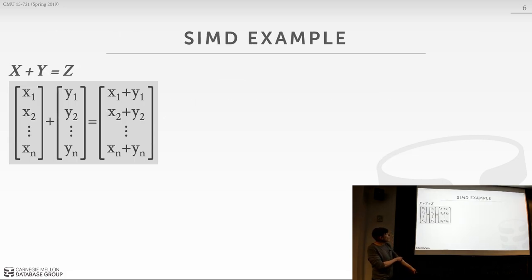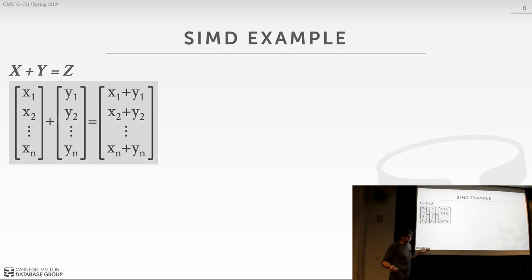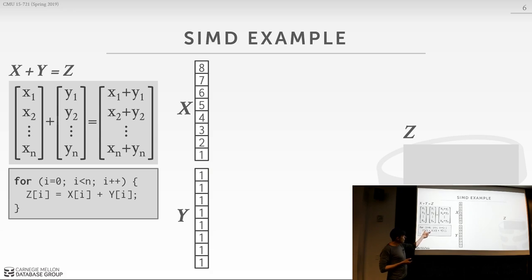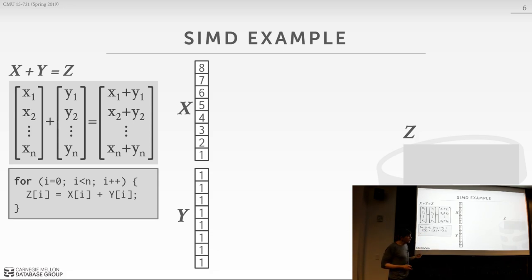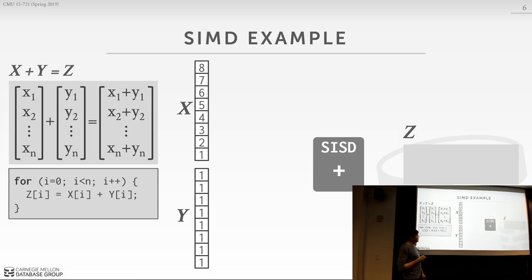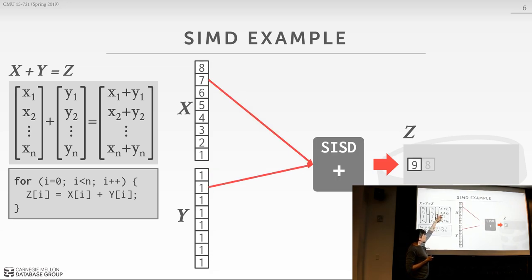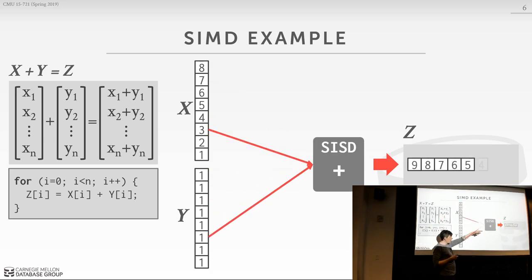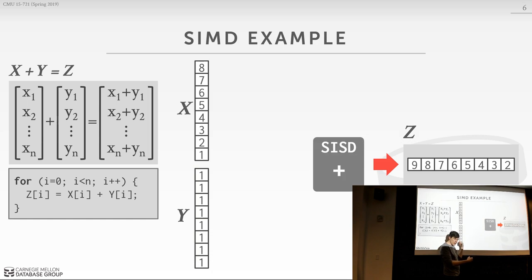Here's a simple example. Say we want to take two vectors x and y, add them together, and write to a new vector z. In simple C++ code this is just a for loop iterating over every index of x, adding it with the same offset in y, and writing it to z. If you execute this with SISD — single instruction, single data — you just run the for loop, grab two numbers, add them, and write to your output buffer. Every addition in the for loop is one instruction.